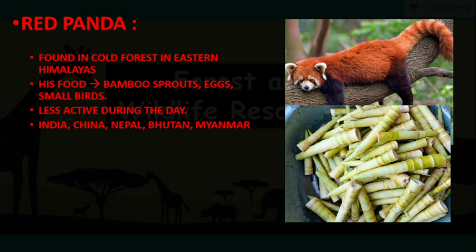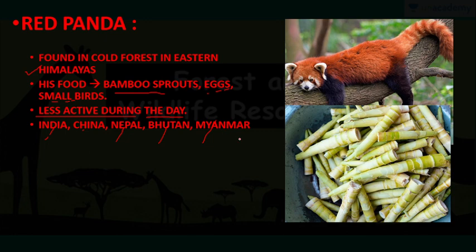Here is the small animal called Red Panda. They are not seen in most of India right now — mostly found in the Himalayan area, but it is also coming to extinction. They are found in the Eastern Himalayas and eat bamboo shoots, eggs and small birds. It is less active during the daytime and is found in India, China, Nepal, Bhutan and Myanmar.